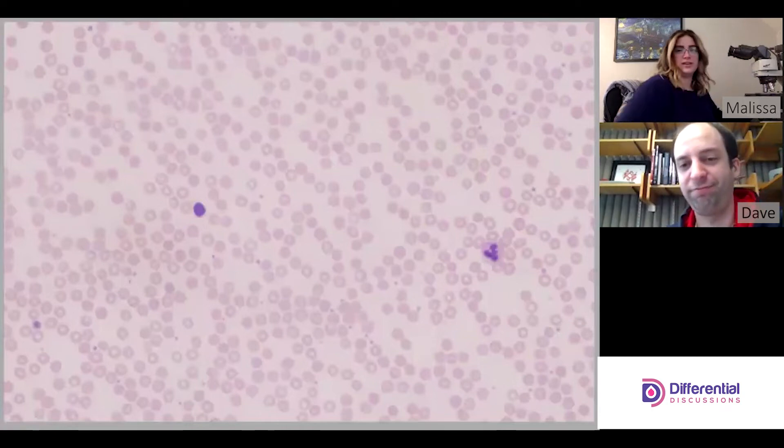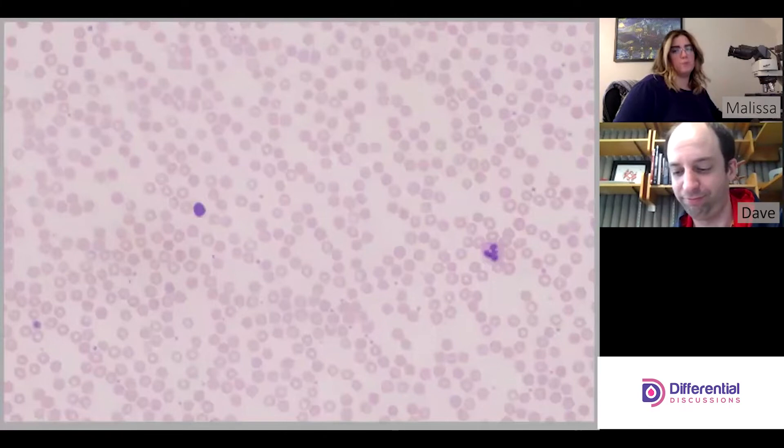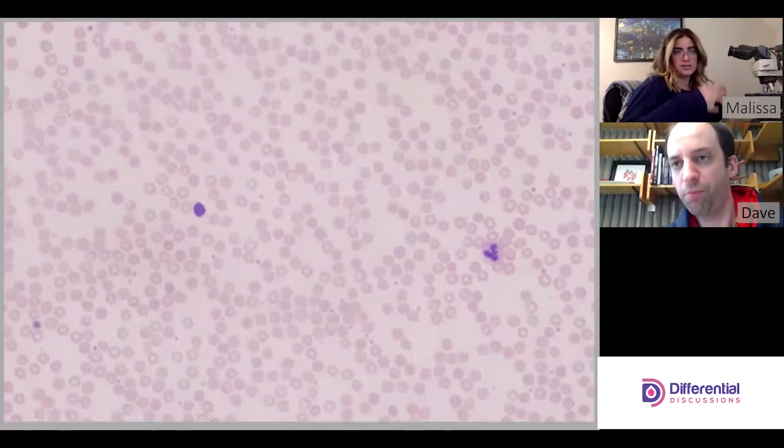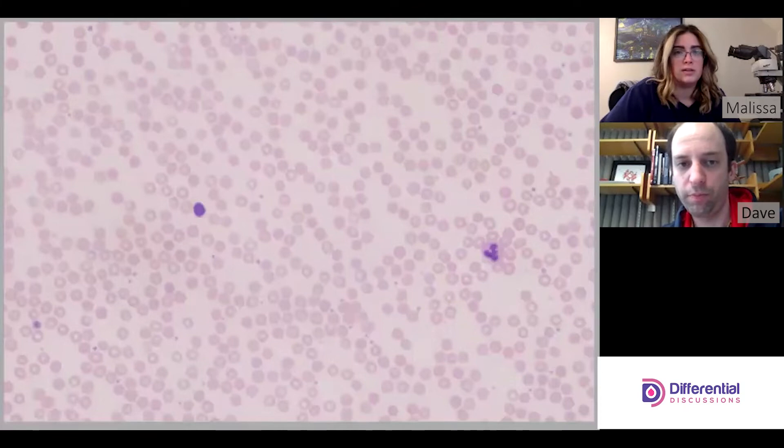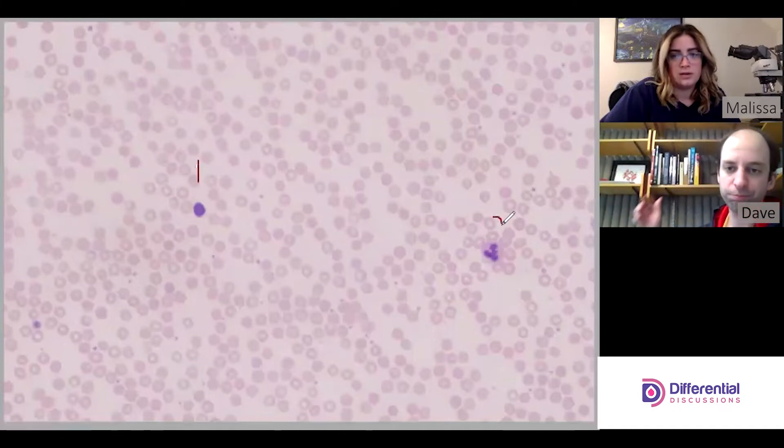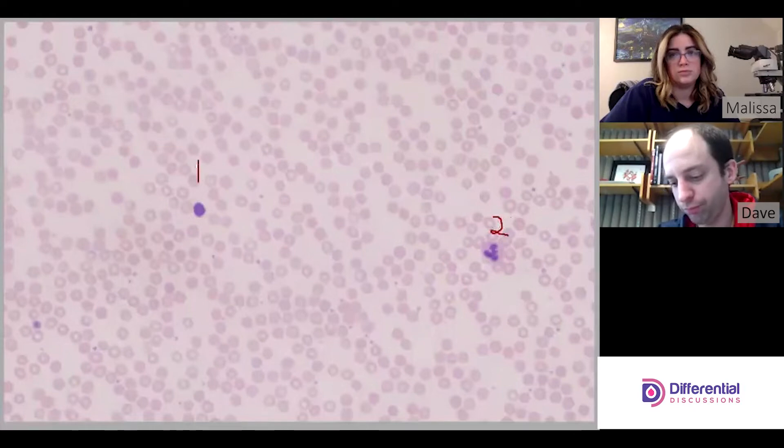All right, so in this field—mind you, we're doing this on 40x—so we prepped, found the field, here we are on 40x, and this is where we're starting. So this is our first of 10 fields. In this field that we have here, let me just pull up my little annotation guy so I can annotate it. We have one cell here and we have one cell here. Got it. So two in this one.